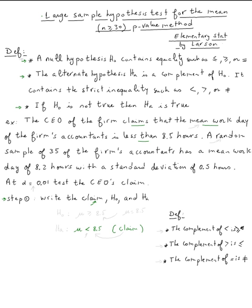We need to write h sub zero and h sub a. The null hypothesis will always have the equality sign in it — it contains equality. Since the claim mu less than 8.5 doesn't contain equality, it has to be the alternate hypothesis, because it's strictly less than 8.5.